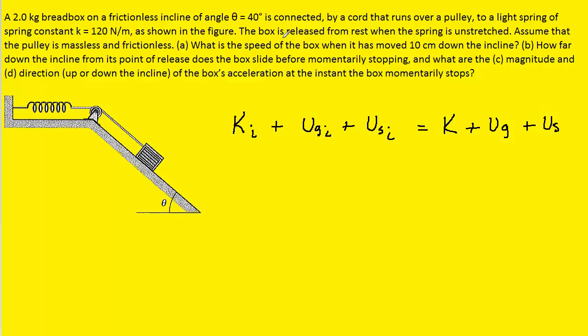Initially, the box is at rest, so the kinetic energy will be zero. Also, the spring initially is unstretched, so the potential energy stored in the spring initially will be zero. On the other side of the equation, we have the final kinetic energy, the final gravitational potential energy, and the final spring potential energy.